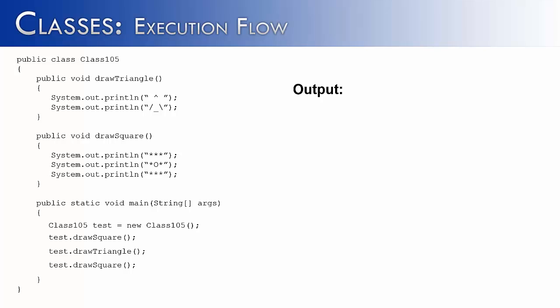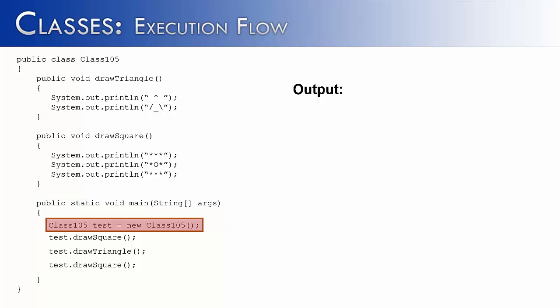The starting point for all programs is going to be the main method. Once the main method is called, it's going to execute the code inside. In order to use the methods, we must construct an object of the class that we're in — the class 105 class. We call the object test, and test is referring to a class 105 object.